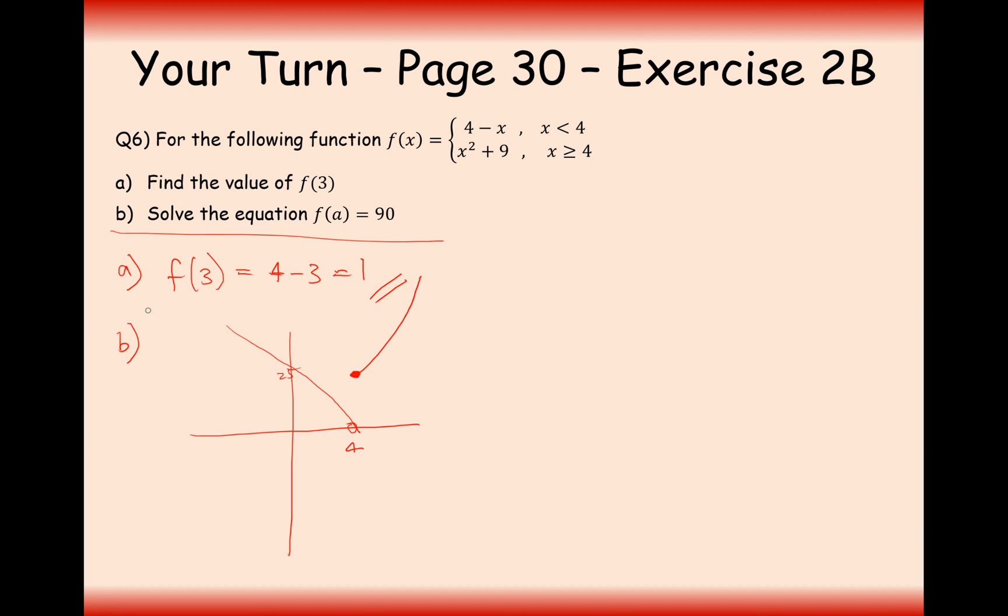So at some point it's going to equal 90 on both of these lines here. So one intersection point here, one intersection point here. So I'm going to need to solve for both of them. 4 minus x equals 90. Add the x onto the other side, minus the 90 onto this side. Minus 86 equals x. And for the second solution, x squared plus 9 equals 90. So that's going to mean that x squared is equal to 81. So x is going to equal positive or negative 9. But x can only be a positive number in this case here. So we're only going to take the x equals 9 solution. So the answers here for A are minus 86 and 9.